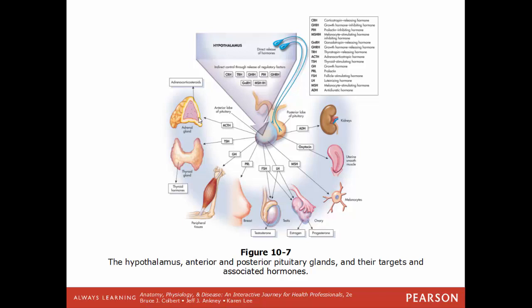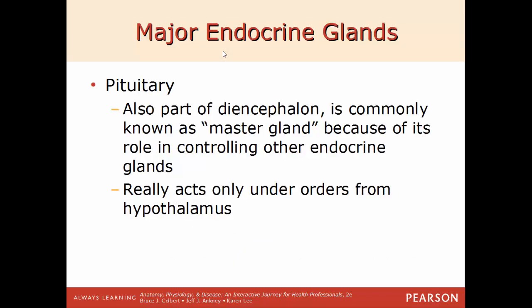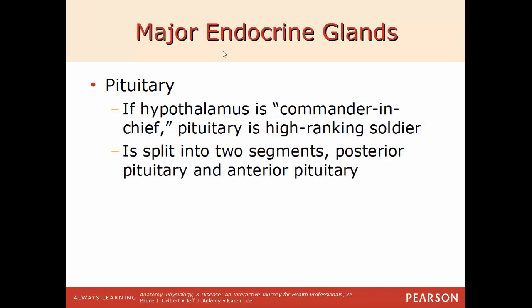Most hormones seen in the pituitary overview — ACTH going to the adrenal cortex, TSH (thyroid stimulating hormone), growth hormone, prolactin, FSH, LH, and MSH — come from the anterior lobe of the pituitary gland. Only oxytocin and ADH (antidiuretic hormone) are from the posterior lobe. Using a military reference: if the hypothalamus is the commander-in-chief, the pituitary is a very high-ranking soldier, acting only under orders from the hypothalamus via inhibiting or releasing hormones.